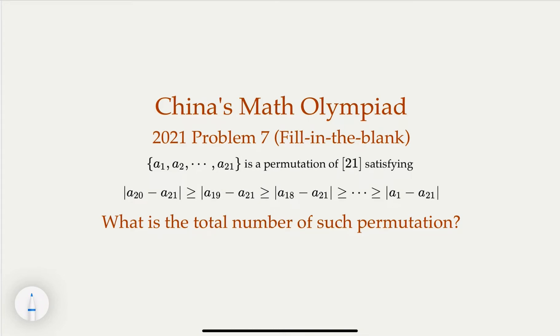All right, so this is from China's Math Olympiad, 2021 problem 7, filling the blank, regarding the counting. So here we're saying that we have a permutation of number 1, this represents a set of number 1 to 21.